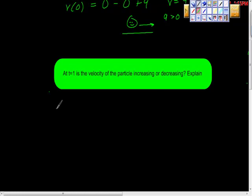So how do we find that? Yeah, we have acceleration at any time is the first derivative of velocity or second derivative of position.